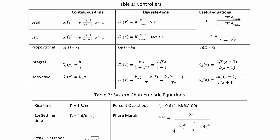Some of the useful equations would be how to calculate alpha and it is 1 minus the sine of phi max over 1 plus the sine of phi max, where tau is equal to 1 over the maximum frequency times the square root of alpha.